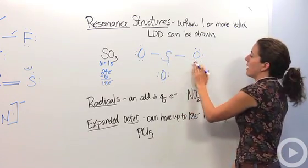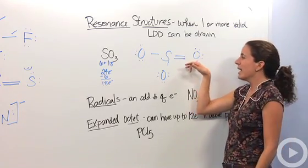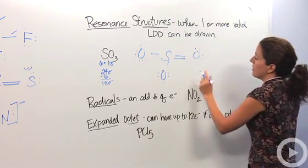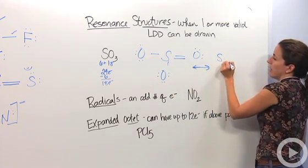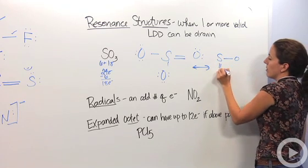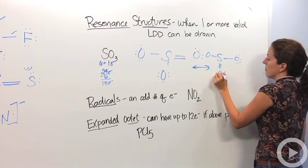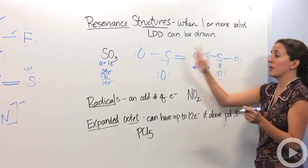Well, we could easily say this guy is going to give it up and share. But why that oxygen? Why does that oxygen have to share and not this one? Well, that's the whole thing. That's resonant structures, right? So it can be that one, or it can be that one, or it can be the other one.